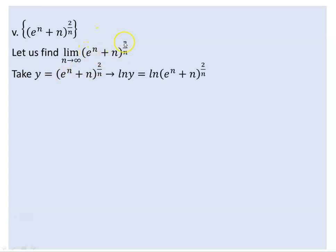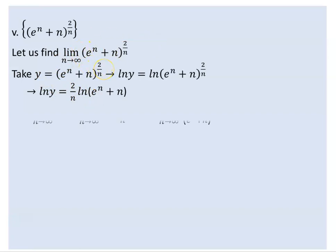With y defined as (2/n) to the power n, we take ln of both sides. So ln y equals ln of (2/n) to the power (n plus 1), which by logarithm properties equals (n plus 1) times ln(2/n). This gives us a 2/n factor in the logarithm.